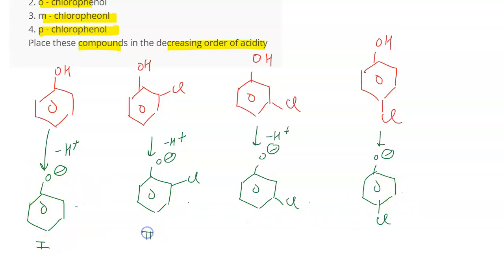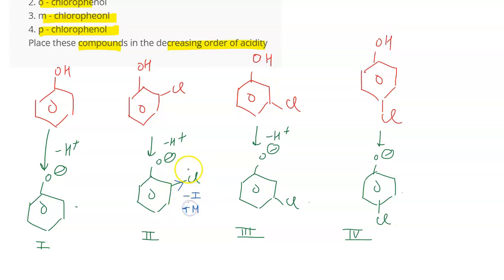When we have an electron withdrawing group, it is going to increase the acidity. In the first compound, there is no group attached. In the second one, there is an electron withdrawing group — Cl — which has a minus I effect. It also shows a plus M effect because it has a lone pair of electrons and can donate through resonance. Due to this electron donating effect, it is going to destabilize the negative ion because of the plus M effect.